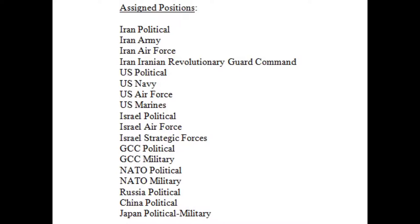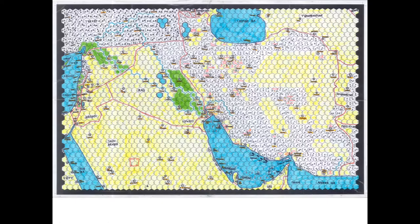Each assigned position has a mission card detailing victory points gained or lost for certain actions and outcomes — tactically for military leaders, or economically and in international relations for foreign ministers. Participants include Iran, the U.S., Israel, the GCC (Gulf Cooperation Council — Saudi Arabia plus Oman, Kuwait and other Gulf states), NATO representing European states, Russia, China, and Japan. Russia, China, and Japan are each handled by one individual. Positions can increase or decrease with class size, though this represents the minimum personnel needed.